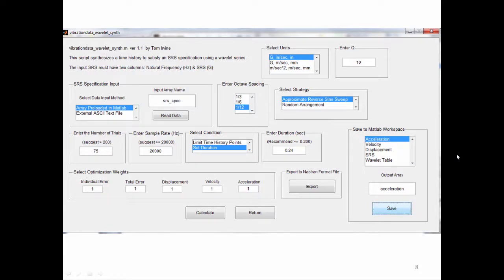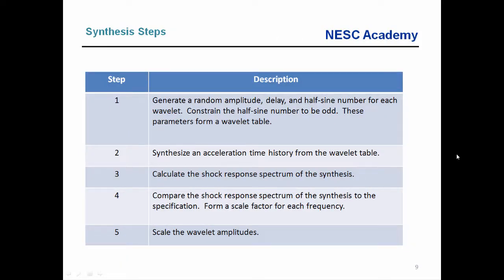Let's go back and fill in some gaps about what the software is doing. Step one: generate a random amplitude, delay, and half-sine number for each wavelet — the number of half sines must be an odd integer greater than or equal to 3. These parameters form a wavelet table for each natural frequency of interest, which in our case we're running at 1/12th octave spacing. Then we synthesize an acceleration time history from the wavelet table using the equation shown earlier. We then calculate the shock response spectrum of the synthesized result.